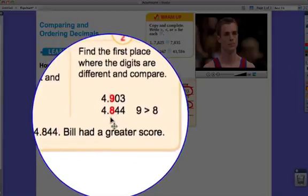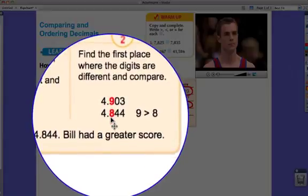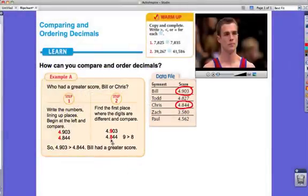That's correct, and we also know that nine is greater than eight. So if we go back to the question, who had a greater score, Bill or Chris? Well, it sure seems that Bill's score of 4.9 is greater than 4.8.